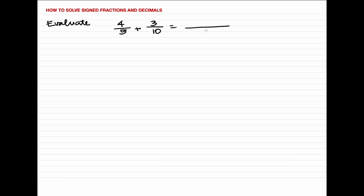We will need to make the denominator 5 become 10 by multiplying by 2. By doing so, we also need to multiply the numerator by that same number. So 4 times 2 is 8, while 3 will just be multiplied by 1 since the denominator is already 10. Adding 8 and 3 gives 11, hence the result is 11 over 10, which can also be written as 1 and 1 over 10.